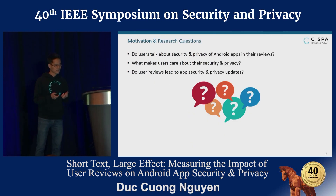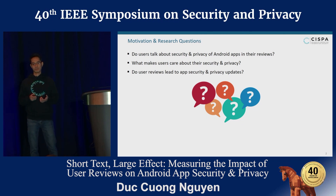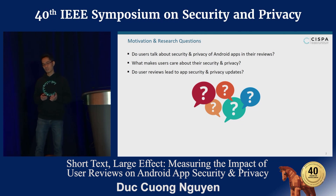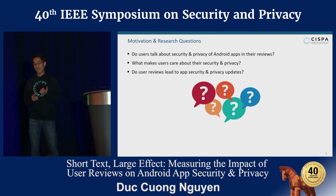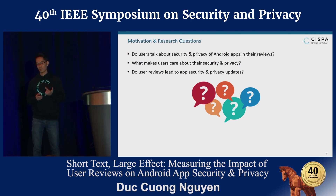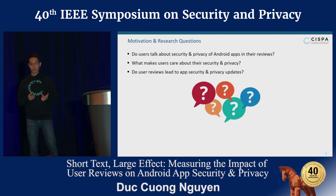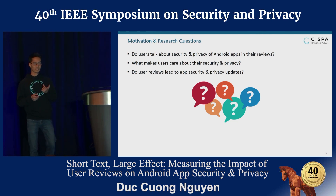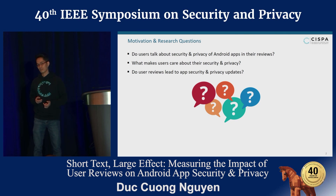With that in mind, we ask ourselves three questions. First, do users talk about the security and privacy problems of Android apps in their reviews? Second, if they do, what makes them care about their security and privacy? And last, very importantly, do user reviews lead to security and privacy updates?